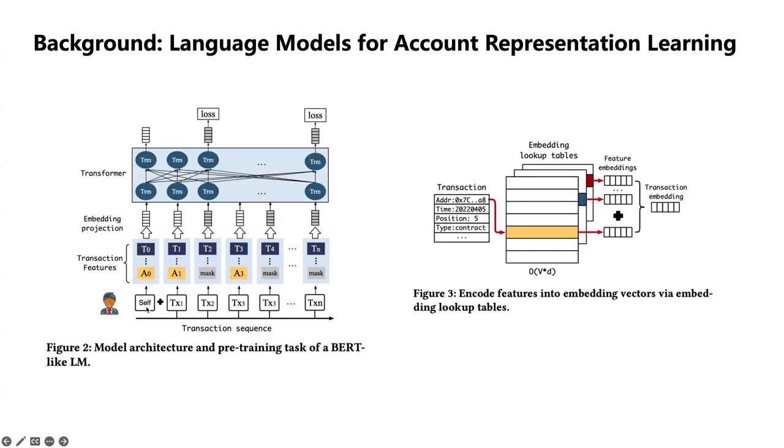For example, for a user account, we sort all of its transactions according to time step to form a sequence. And for each transaction, there are several features, and we use embedding techniques to project those features into embedding vectors, including address features. Then we use multilayer transformer for self-attention computation.